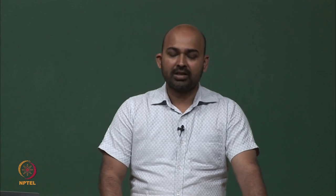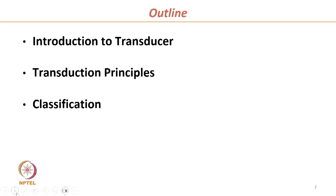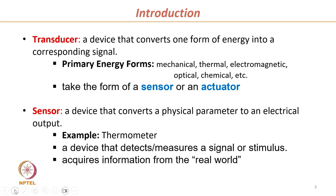Welcome to the course Transducers and Instrumentation. Today's outline is we will discuss the introduction to transducers, transduction principles, and the classification of transducers. A transducer is a device that converts one form of energy into a corresponding signal. The incoming energy can be of any form — mechanical, thermal, electromagnetic, optical, or chemical — and the transducer generates the equivalent output signal.